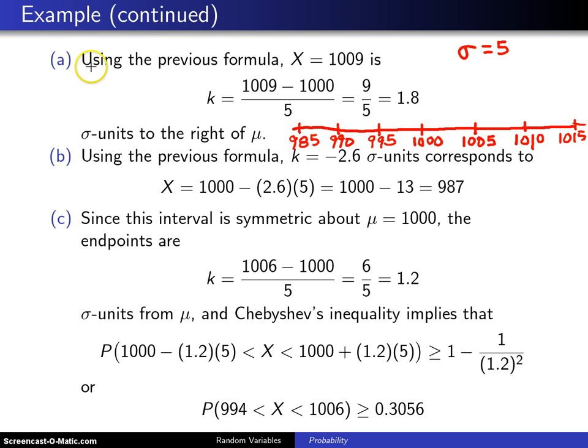So when the question is, how many sigma units to the right of mu is 1009? You can see over here 1009 appears right here. And if each tick mark here is a sigma unit, then it is 1.8 sigma units to the right. And that is calculated by taking 1009 minus 1000 divided by the standard deviation 5, and that is 9 fifths or 1.8.